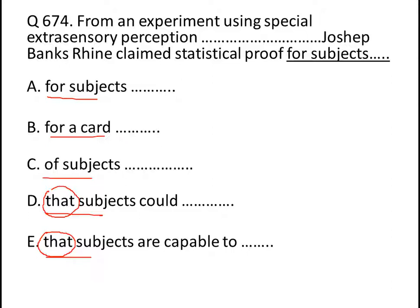So if you just read the part before the underlined portion, it says 'Joseph Banks Ryan claimed statistical proof.' So now he's claiming something, so he has to state something. So if you're stating something, we definitely need 'that'. Eliminate options A, B, C — we don't need 'for' and 'of'.